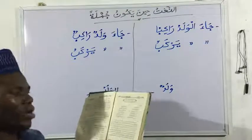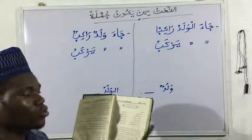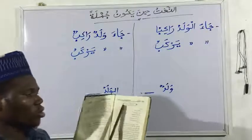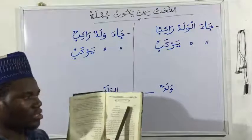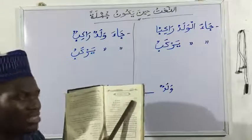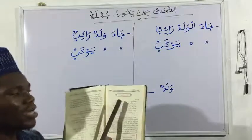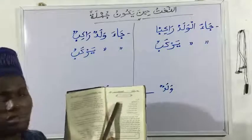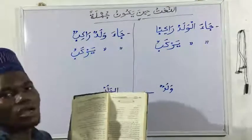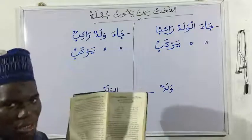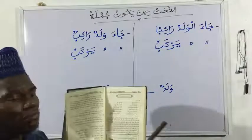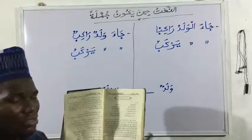Now let's see the amtila — the examples. Number one: amalun nafi'un lahu — this is a beneficial work. The naat is what? And what is equal to fa'il? The manu't is amalun. So because this is indefinite — nakira — we can say it is a jumla fi'liyya: a work that is beneficial. It is sifa for it because it is coming after, or it is describing, an ismu that is in nakira state.